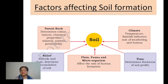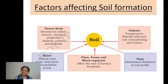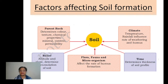The third factor is flora, fauna, and microorganisms. Humus is the upper thin layer of soil formed by decomposed organic matter from dead remains of animals and plants. If humus content is more, the soil is more fertile; if humus content is less, the soil will be less fertile. The amount of living organisms in the soil affects humus content and soil formation.